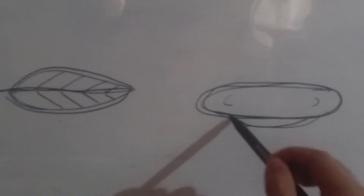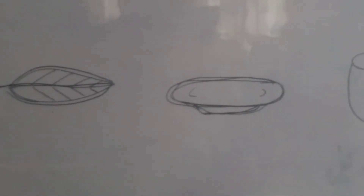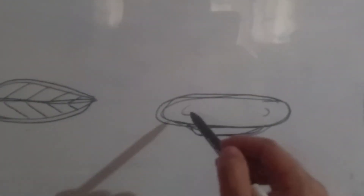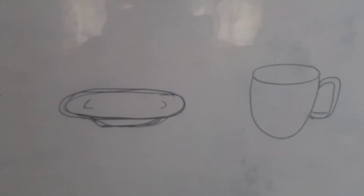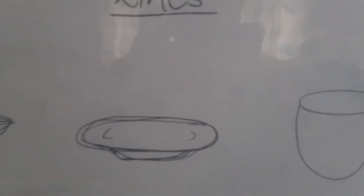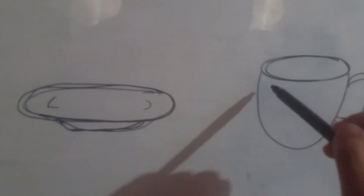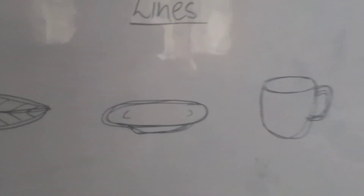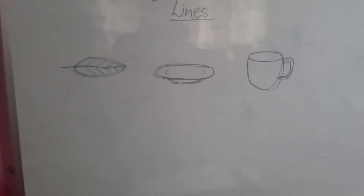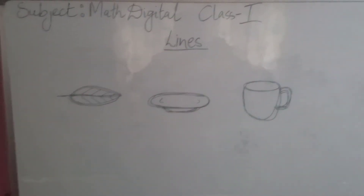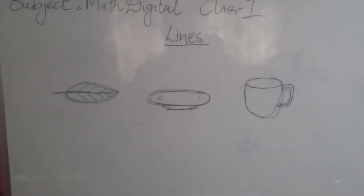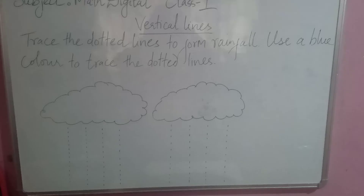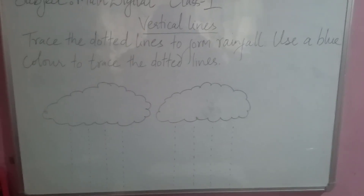The plate looks like a curve shape, so it has a curved line. And if you look at this mug, there is also a curved line present in the mug. I hope you now have some idea about lines and curves.